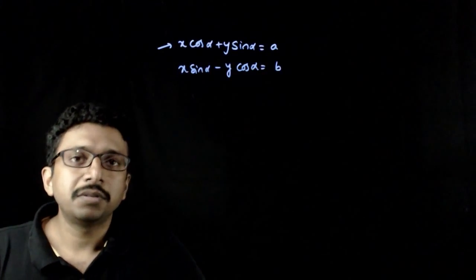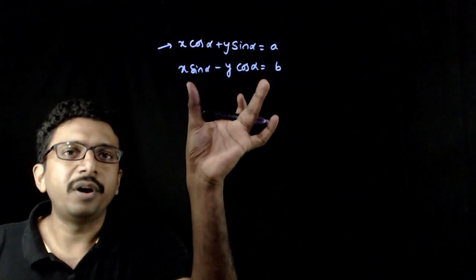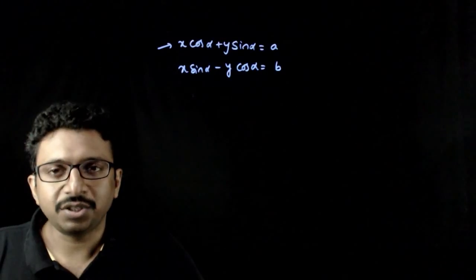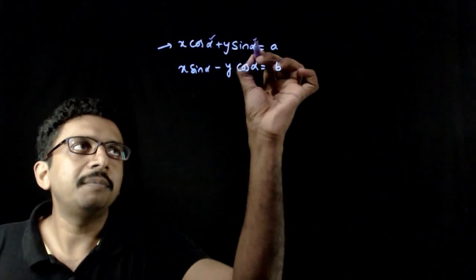Welcome students. You are asked to find the locus of point of intersection of these two lines where alpha is a parameter.